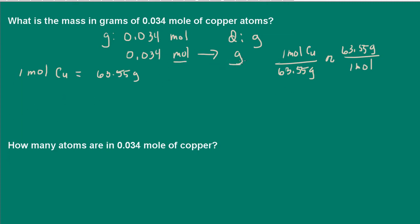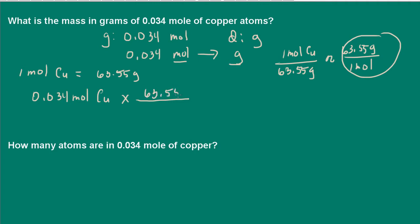Now I can go from moles to grams because I have my conversion factors. We're given 0.034 moles of copper. The idea is to cancel out units — in this case we want to cancel out moles so that we end up with grams. So we use 63.55 grams per mole. Moles cancel out and we're left with grams. That comes to 2.16 grams.